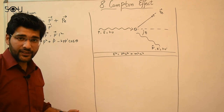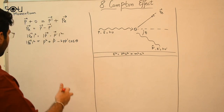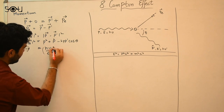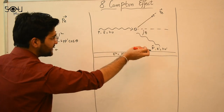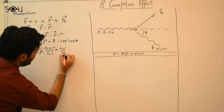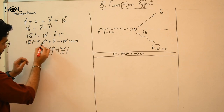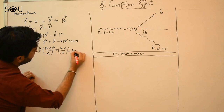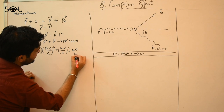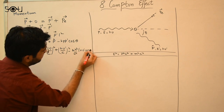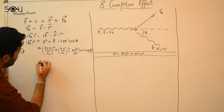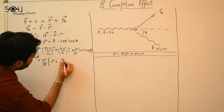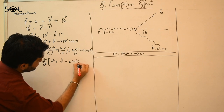Now substituting the photon momentum formula p = hν/c: the momentum before collision is hν/c and after collision is hν'/c. So p_e² = (hν/c)² + (hν'/c)² − 2(hν/c)(hν'/c)cosθ. Taking h²/c² common, we get p_e² = (h²/c²)(ν² + ν'² − 2νν'cosθ).